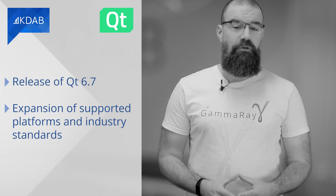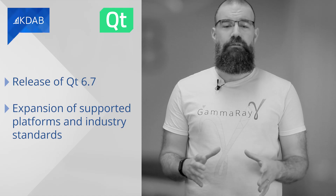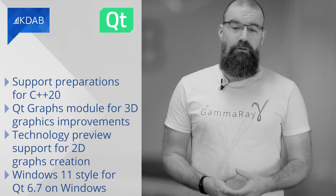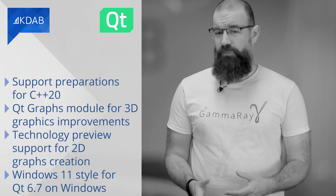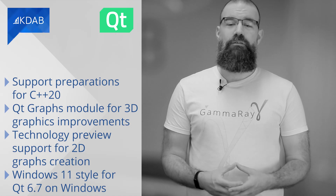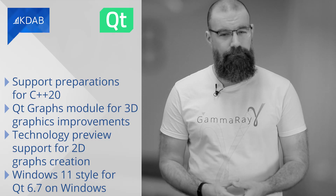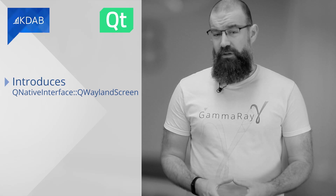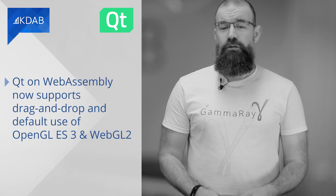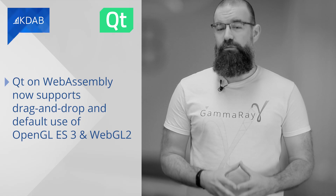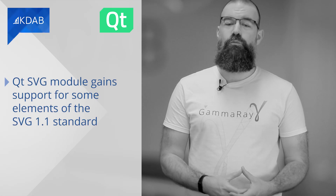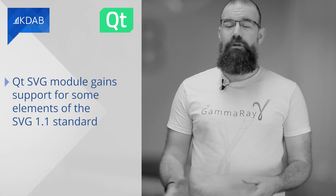With the release of Qt 6.7 come new features and improvements. This release focuses on the expansion of supported platforms and industry standards, making code written with Qt more sustainable. Notable highlights include support preparations for C++20, improvements in the Qt Graphs module for 3D graphics, technology preview support for 2D graphs creation, and the addition of a Windows 11 style on Windows. Qt on WebAssembly now supports drag-and-drop and default use of OpenGL ES3 and WebGL 2, while the Qt SVG module gains support for some elements of the SVG 1.1 standard. You can read more in the release blog linked below.